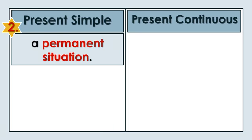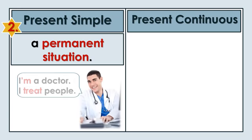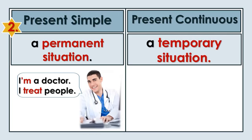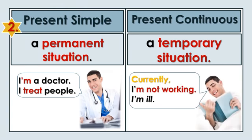We use the Present Simple to describe a permanent situation. I am a doctor. I treat people. We use the Present Continuous to describe a temporary situation. Currently I am not working. I am ill.